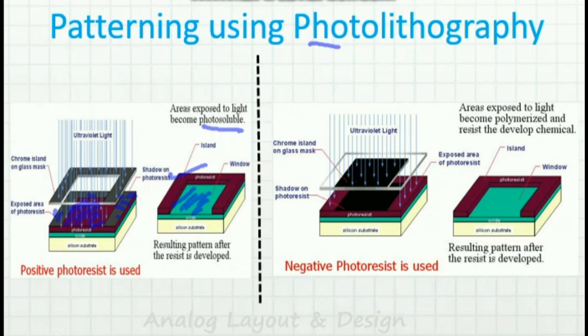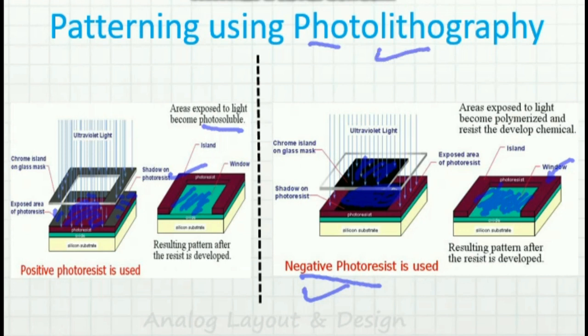Using photolithography, you can do patterning of many things — patterning of metals, patterning for ion implantation, and a lot more. Photolithography uses masks to do patterning. A negative photoresist is just the opposite — the center portion is not getting exposed to light, and that unexposed portion becomes photo-soluble and can be removed. The portion that gets exposed becomes hard and remains. So we now understand positive photoresist, negative photoresist, photolithography, and patterning.